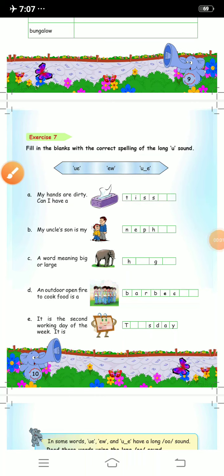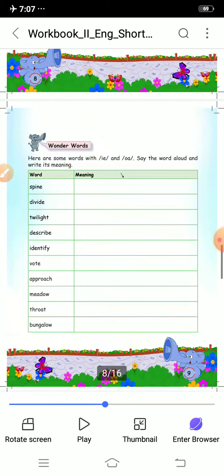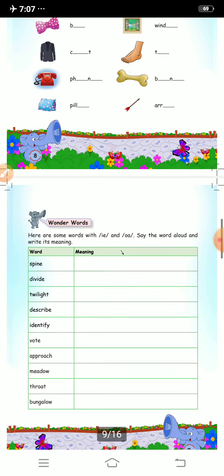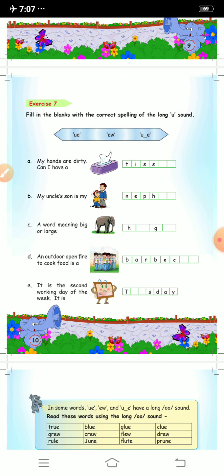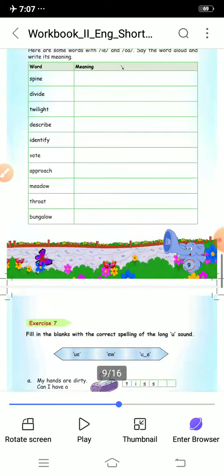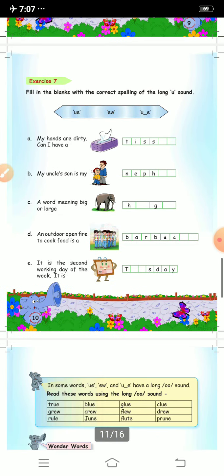Hello my dear students, wish you all a very good morning. Welcome to your English class. Today we are going to solve the textbook, that is symphonics workbook exercise number 7. The question is to fill in the blanks with the correct spelling of the long u sound.